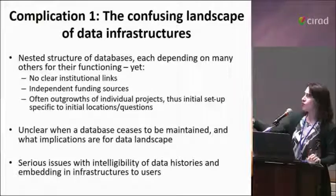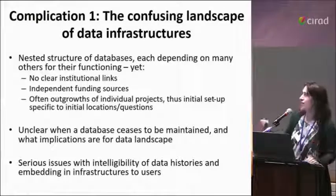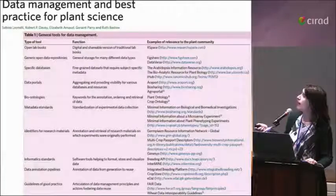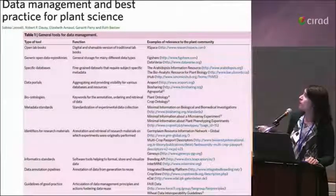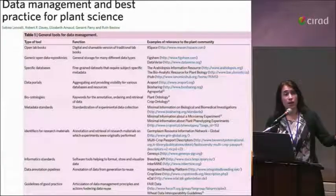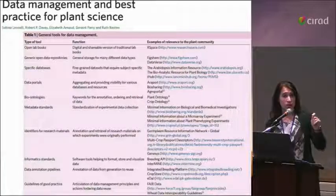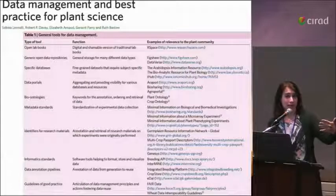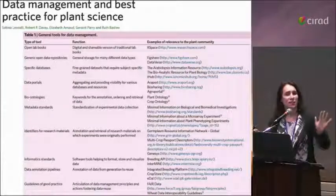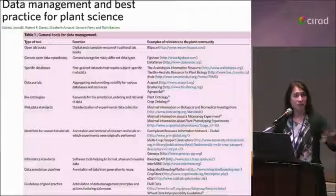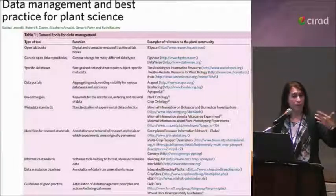These are serious issues in terms of intelligibility of data histories to users themselves. One of the things we did last year, together with Elizabeth and Rob Davie from COPOPO and Ruth Bustle and Perry from Garnet, was to try and provide a taxonomy to plant scientists of all the different types — not even the actual resources, but types of resources that somebody working in plant science would want to know about — to be able to think about curating their data. And as this very long list shows, this is really an uphill struggle. Even just classifying these in typologies becomes a very complex exercise.